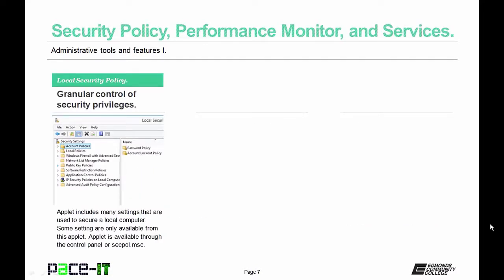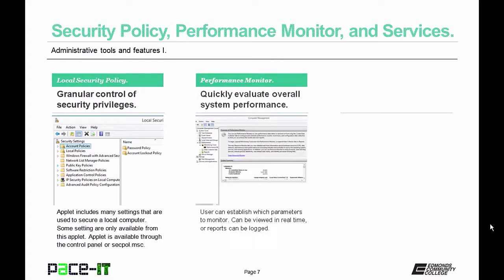Local security policy gives you granular control of security privileges. The applet includes many settings used to secure the local computer, and some settings are only available from this applet. It is available through the control panel or through secpol.msc. Performance Monitor quickly evaluates overall system performance — the user can establish which parameters to monitor, and it can be viewed in real time or reports can be logged and then viewed in Event Viewer.